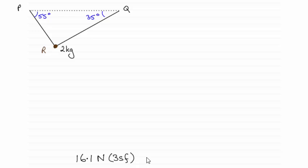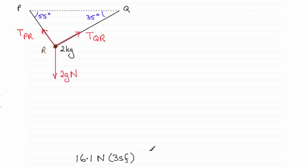Some methods are better than others, or you might want to just fast forward because I'm going to go quite slowly through this and it's quite a long video. First of all, what you need to do is draw in the forces acting on the two kilogram particle: the weight of the particle, 2g newtons, and the two tensions in the strings, which I've labeled TPR and TQR.